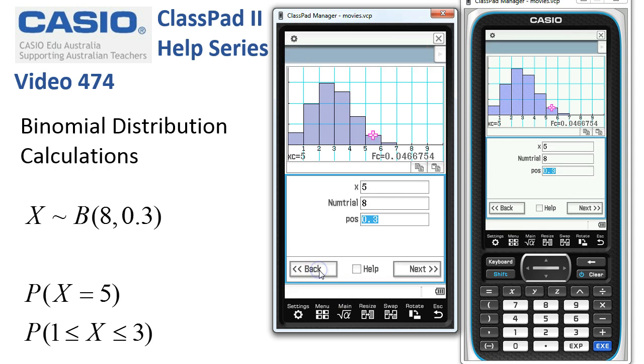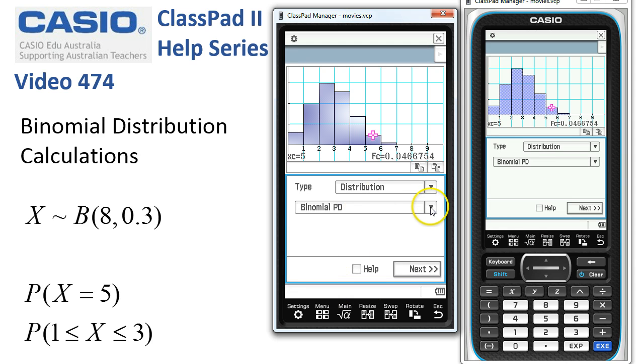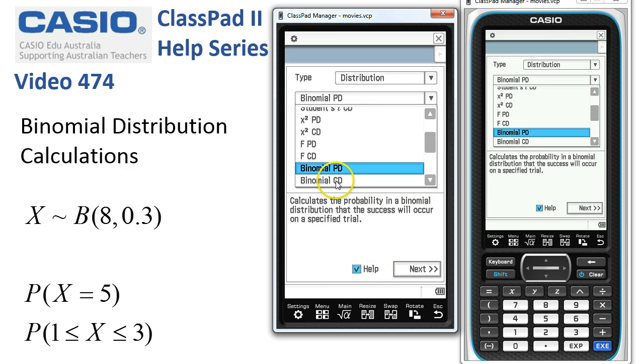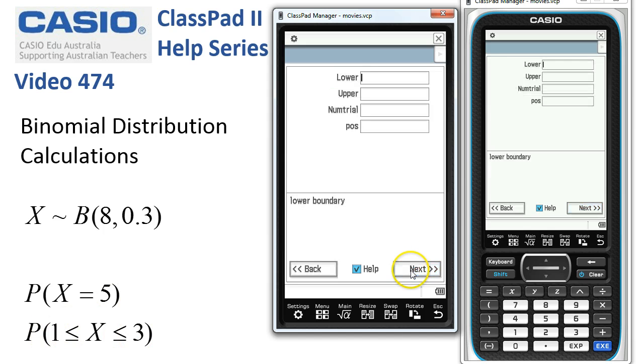So let's go back and back again, and this time we'll tap help. The next one down is the cumulative distribution when we want a range of values. We'll tap next.